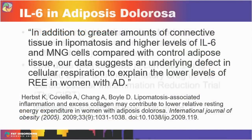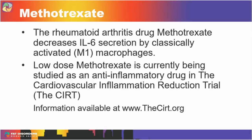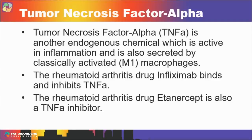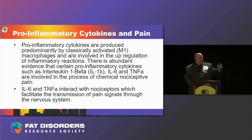There is a drug that targets the IL-6 inflammation pathway — that drug is methotrexate, a rheumatoid arthritis drug that has been studied recently in the Cardiovascular Inflammation Reduction Trial. For more information, that trial has its own website: www.thecirt.org. Tumor necrosis factor alpha is another endogenous chemical active in inflammation and secreted by the MACs. There are two drugs that target and inhibit TNF-alpha: infliximab and etanercept.